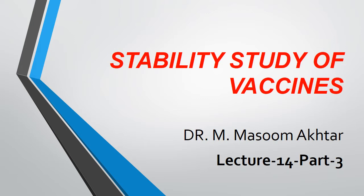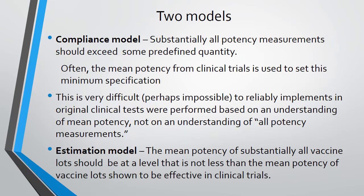In the last part of the Stability Study of Vaccines, we will see some of the vaccine's potential. In this part, we will further study the Stability Study of Vaccines. There are two models for vaccine stability studies: Number 1 is known as the Compliance Model, while Number 2 is known as the Estimation Model.